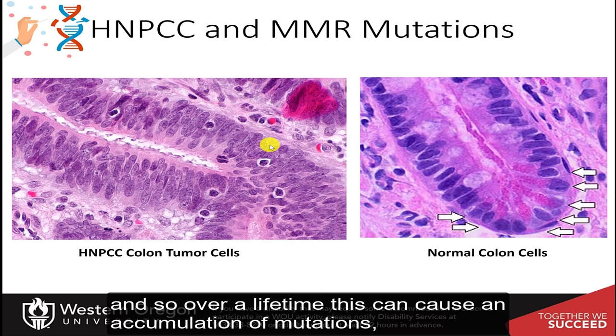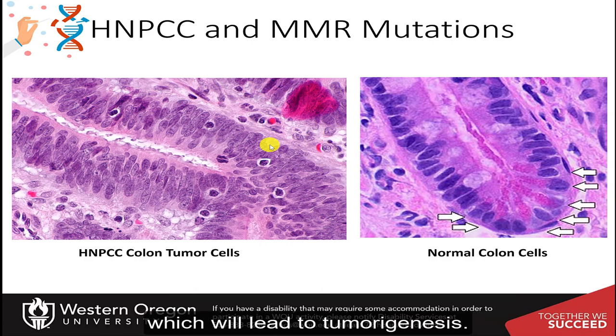If those damaged bases from normal replication processes are not repaired, you can get transitions and transversions that start altering genes involved in the formation of cancers. Over a lifetime, this can cause an accumulation of mutations which will lead to tumorigenesis.